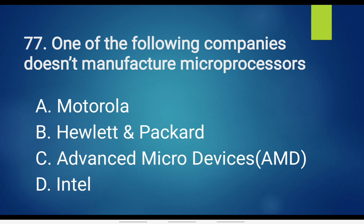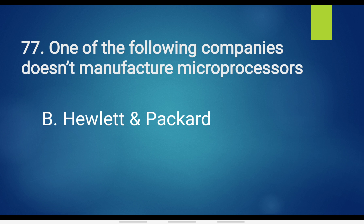Do not forget to subscribe to our channel. Question No. 77. One of the following companies doesn't manufacture microprocessors: Option A. Motorola. Option B. HP. Option C. Advanced Micro Devices. Option D. Intel. The answer is Hewlett and Packard, which is known as HP.